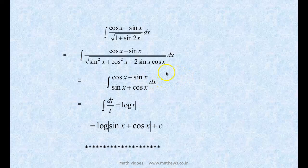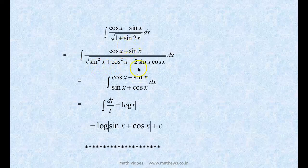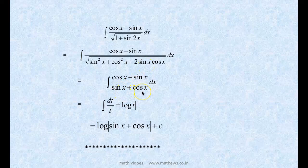Next problem: integral of (cos x - sin x) / √(1 + sin 2x) dx. Before substituting, note that 1 = sin²x + cos²x and sin 2x = 2 sin x cos x. So the denominator becomes √((sin x + cos x)²) = sin x + cos x. The integral reduces to integral of (cos x - sin x)/(sin x + cos x) dx.